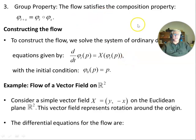The group property: the flow satisfies the composition property. So phi_{t+s} equals phi_t composed with phi_s.